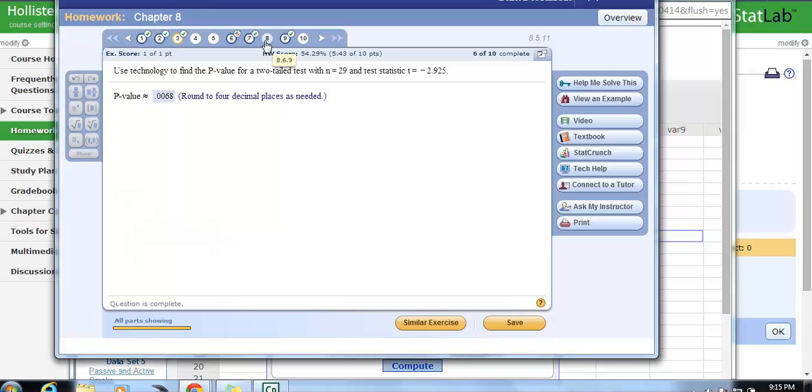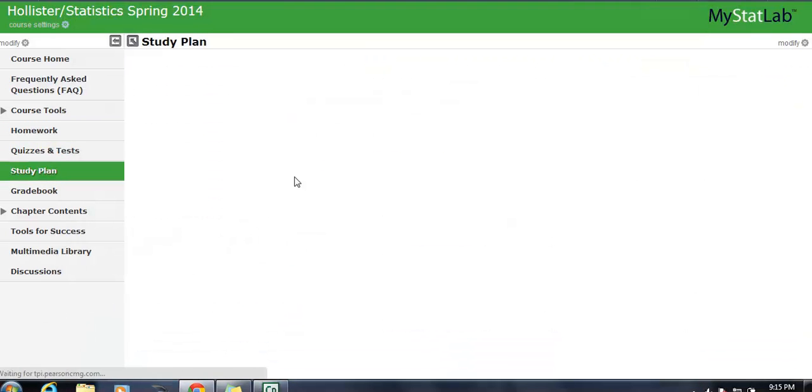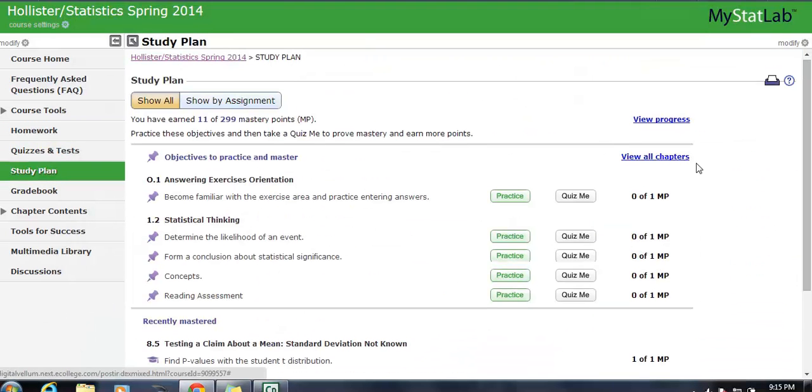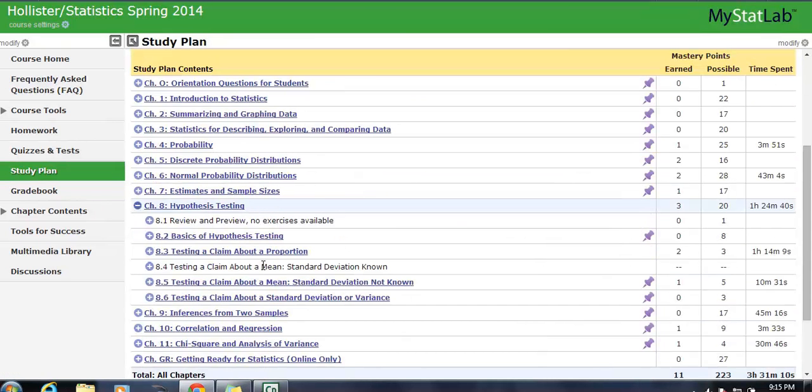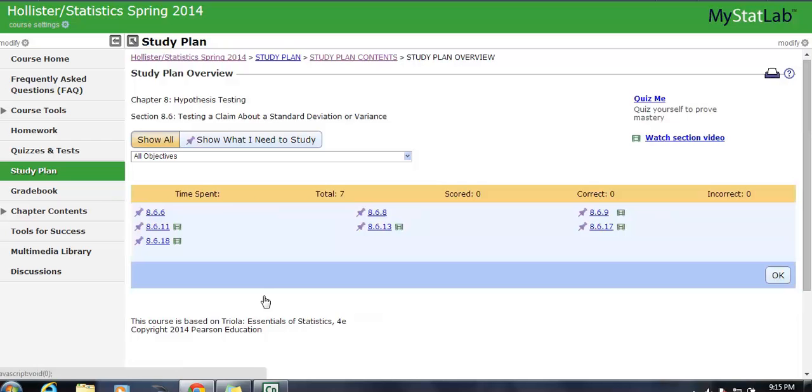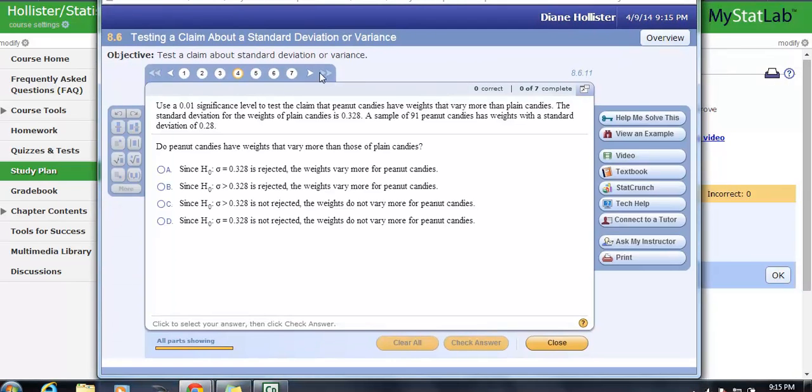You could have a similar sort of exercise when you're dealing with chi-squared. So we're going to go take a look at the study plan to pull up a similar type of question. It shows up elsewhere, but it's just faster to find it this way. We're going to take a look at our question here.